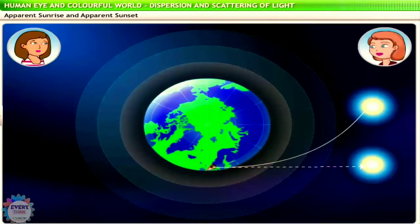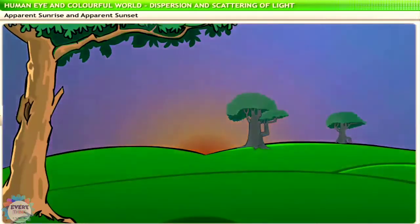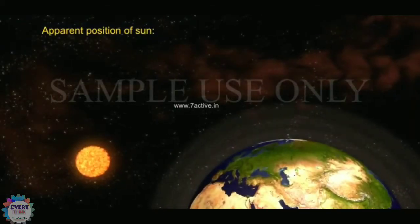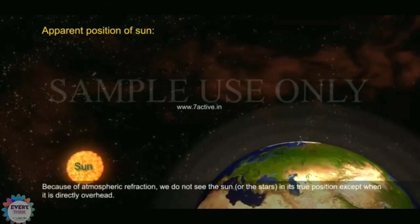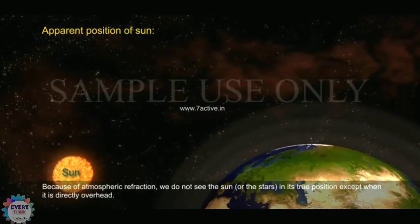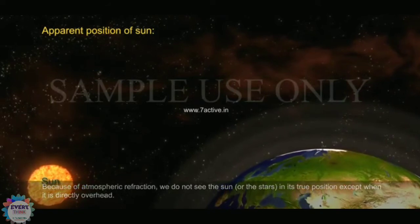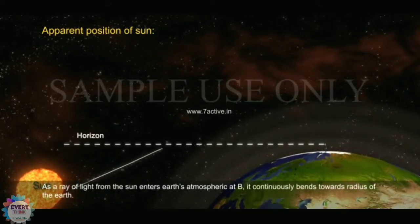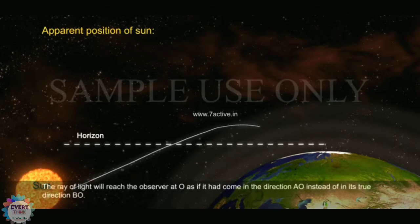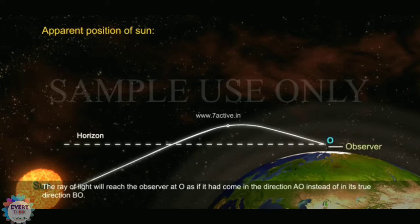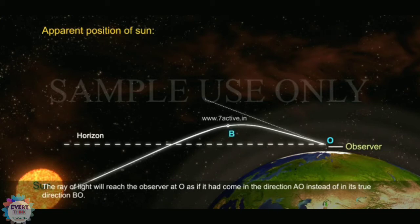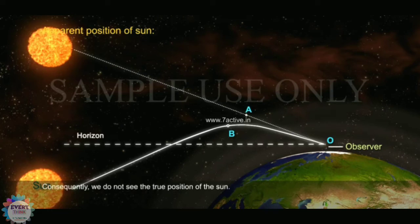This happens because atmospheric refraction causes astronomical objects to appear higher in the sky than they really are. Similarly, sunset occurs shortly after the sun crosses the horizon. Because of atmospheric refraction, we do not see the sun or the stars in their true position except when directly overhead. As a ray of light from the sun enters Earth's atmosphere at B, it continuously bends towards the radius of the earth. The ray of light will reach the observer at O as if it had come in the direction AO, instead of its true direction BO. Consequently, we do not see the true position of the sun.